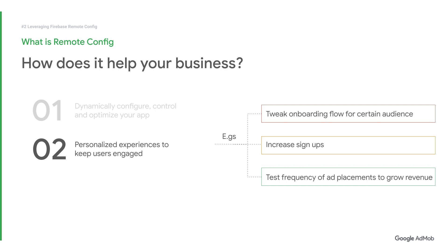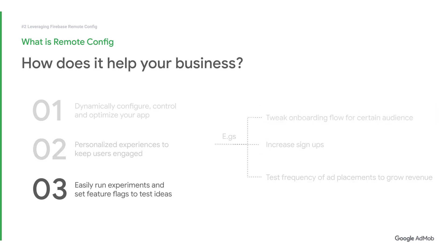In other words, no need to wait for approvals when publishing a new app. On top of easy experimentation, you can also set feature flags to test your ideas. And if your proposed changes don't work as well as you intend, you can always roll them back promptly. With Remote Config, you can confidently configure and change the behavior and appearance of your ad to drive the outcomes you want.